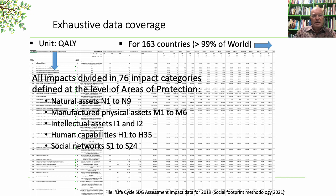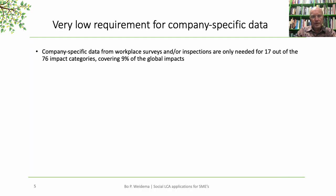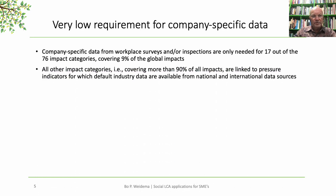All the data are given in the same unit, namely quality-adjusted life years. There is a very low requirement for company-specific data, such as data from workplace surveys or inspections. These are only needed for 17 out of the 76 impact categories, and together these only cover 9% of the global impacts. All the other impact categories — covering more than 90% of all impacts — are linked to pressure indicators for which default industry data are available from national and international data sources.